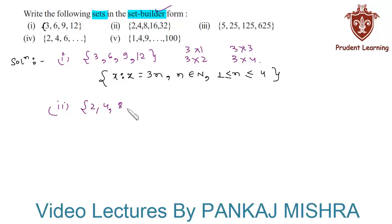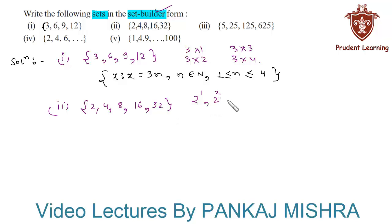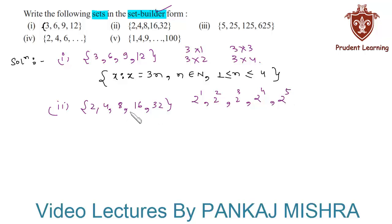In our second section, the given set is {2, 4, 8, 16, 32}. We know that 2 can be written as 2¹, 4 as 2², 8 as 2³, 16 as 2⁴, and 32 as 2⁵.